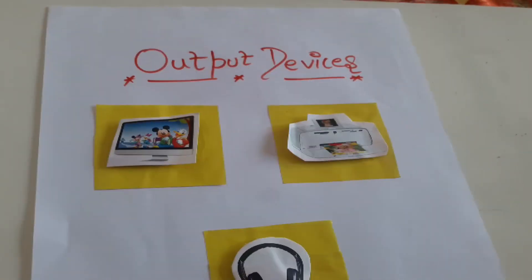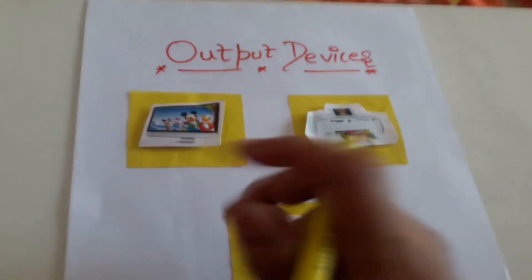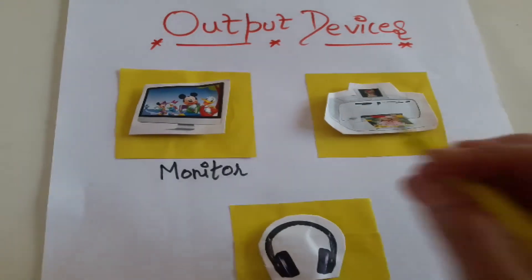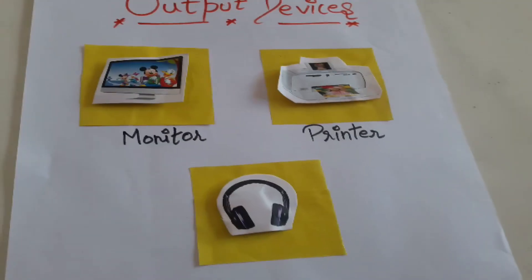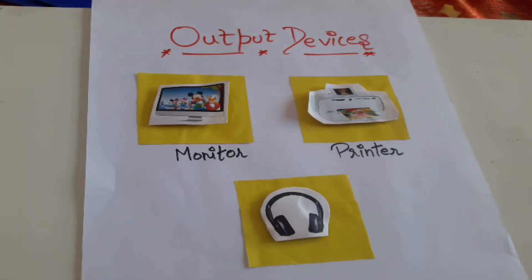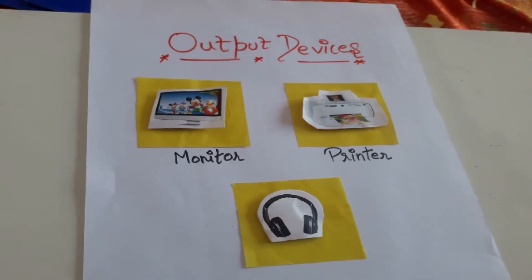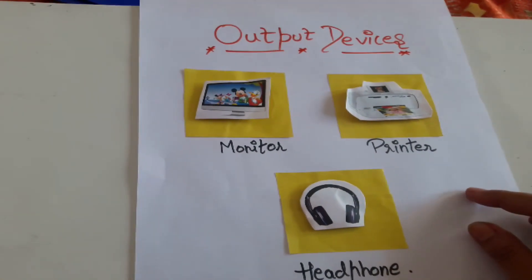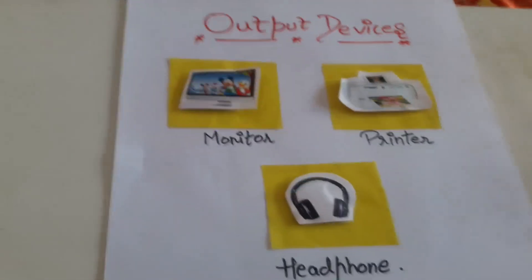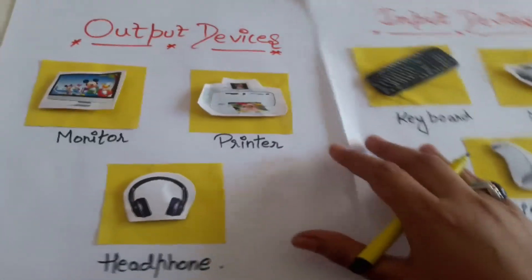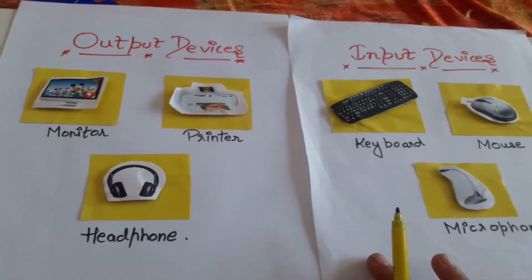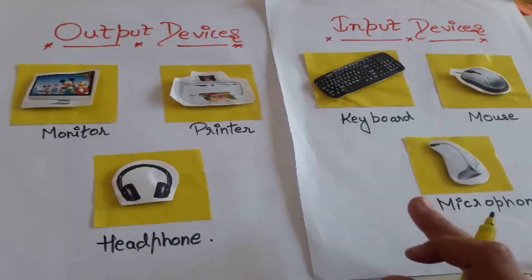Very good children. Now some output devices — this is monitor. And what is this? This is printer. And what is this children? Which device is this children? Can you guess? Yes, this is headphone. Now I hope all the input and output devices are clear children. If you have any sort of doubt, you can ask me. These are my input and output devices — output devices and input devices.